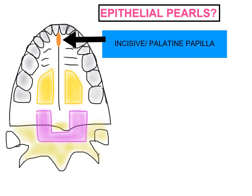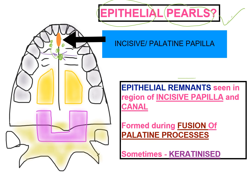Next we come to a structure known as the epithelial pearl, found in the incisive and palatine papilla region. During development in this region, the palatine processes fuse and mucosa is formed, trapping epithelial cells. These are concentric structures called epithelial pearls, considered epithelial remnants seen in the region of the incisive papilla and canal, formed during fusion of the palatine processes. These epithelial cells are sometimes keratinized, producing a keratinized structure at the center.